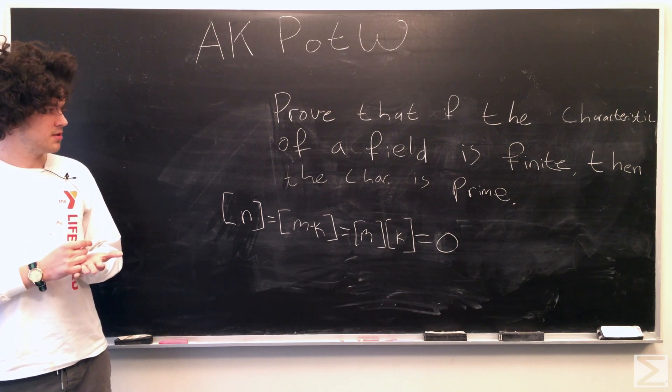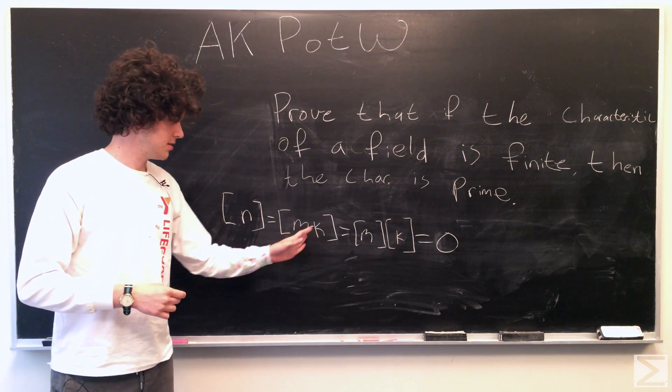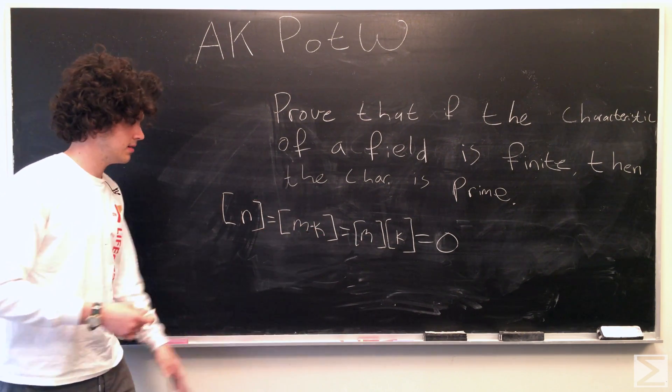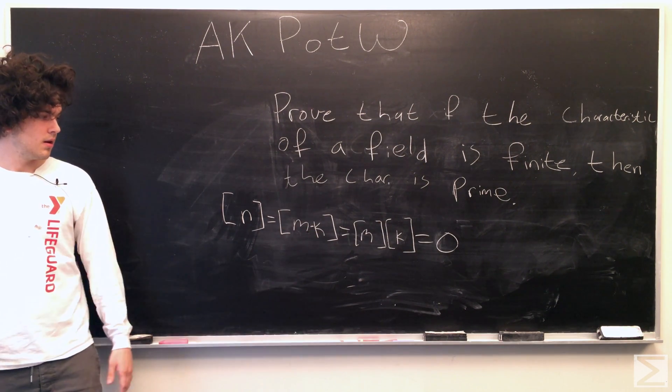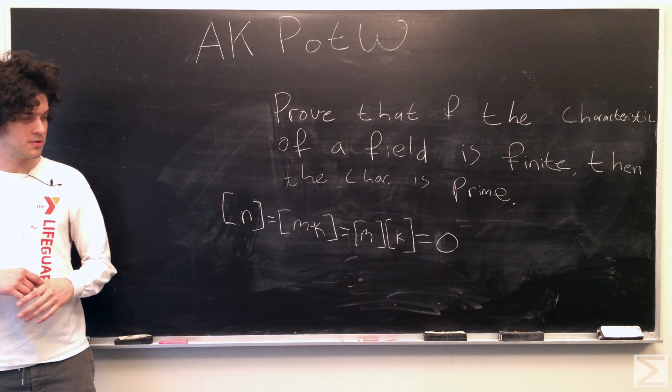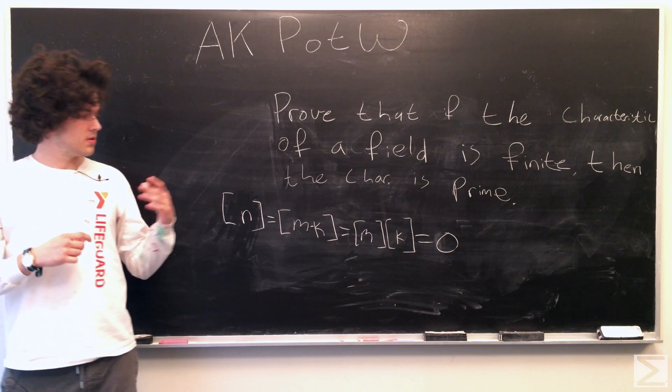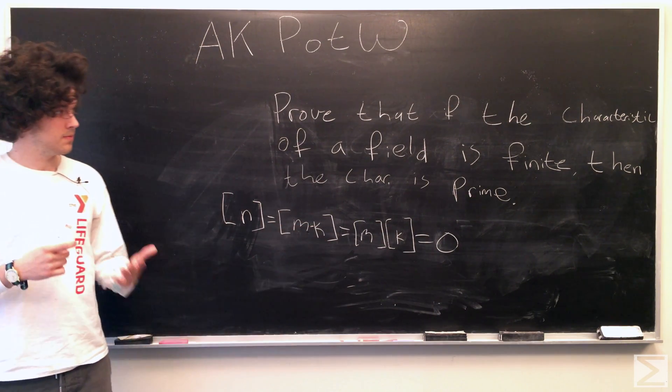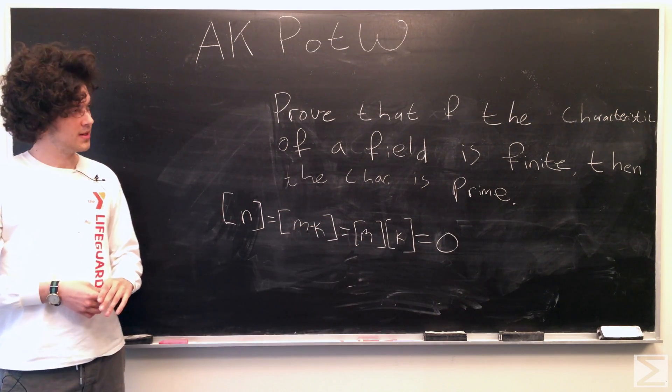So that shows that this is a contradiction, so factoring this such that neither of these is equal to n, which would be, of course, trivial to show. So that's a contradiction, so n has to be prime. And that's the proof there.